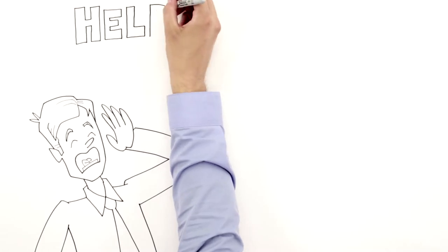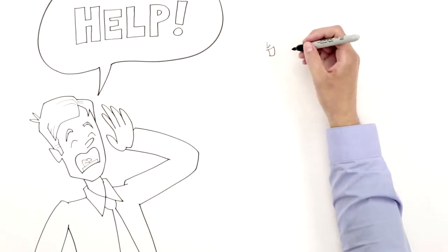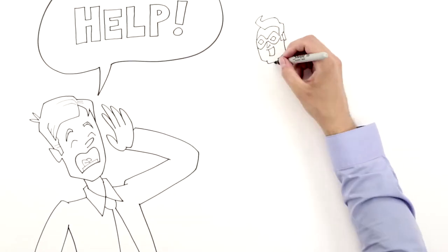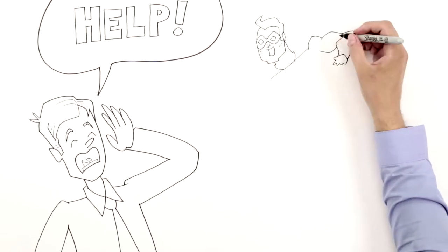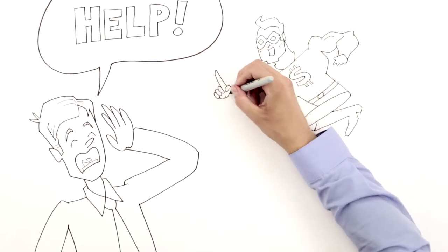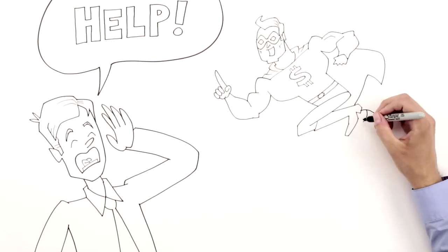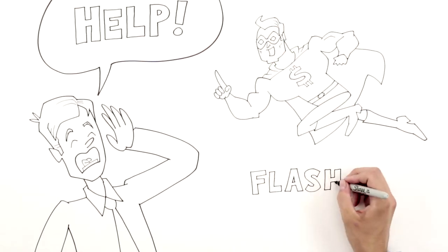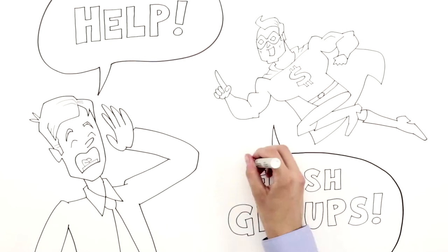One of the other areas on the site is called flash groups. What is a flash group? Well, we know you don't have a lot of time, but we know you need a lot of answers. So we've created a way for you to get information and input from 10, 20, 100 entrepreneurs and find out very quickly the solution to the problems that you're facing today.